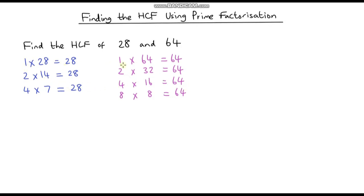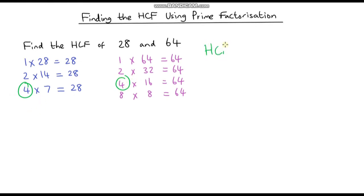1 is a factor of both numbers, 2 is a factor of both numbers, 4 is a factor of both numbers, and those are the only three factors common to both. The highest one is 4, so our highest common factor is 4.